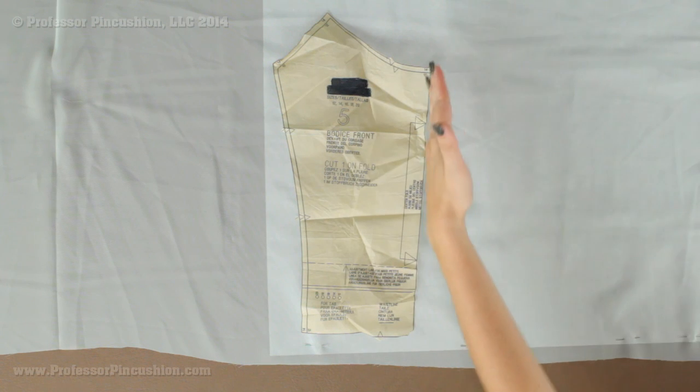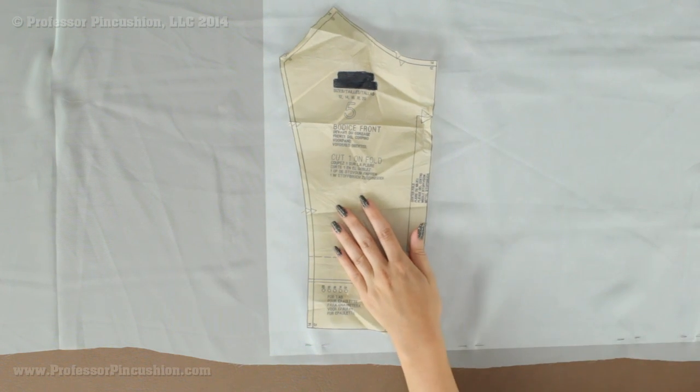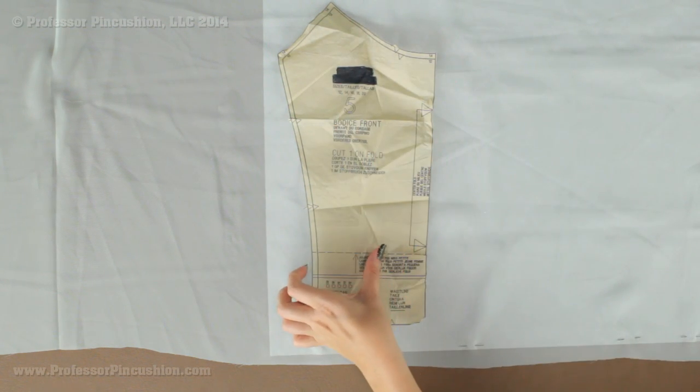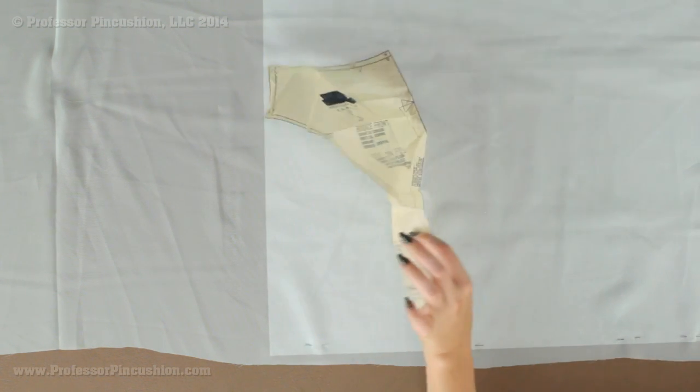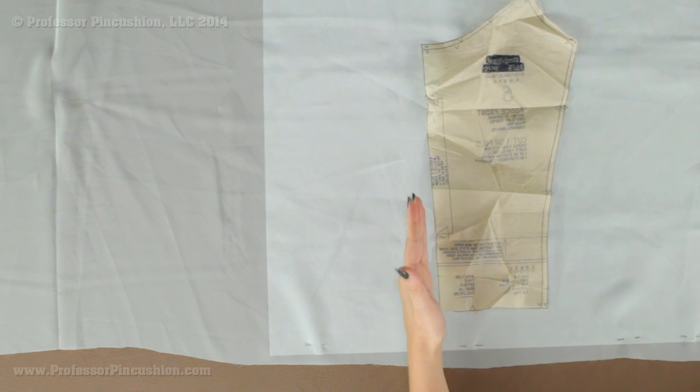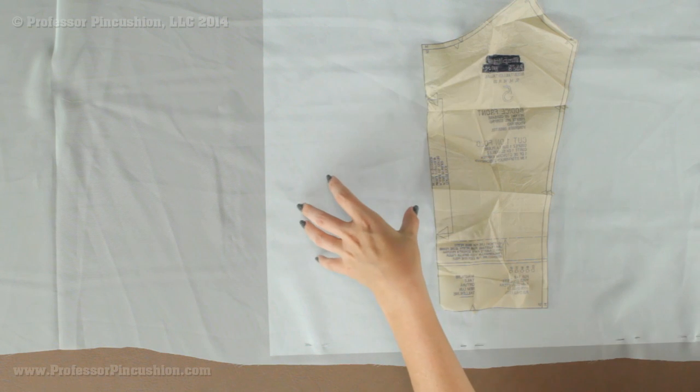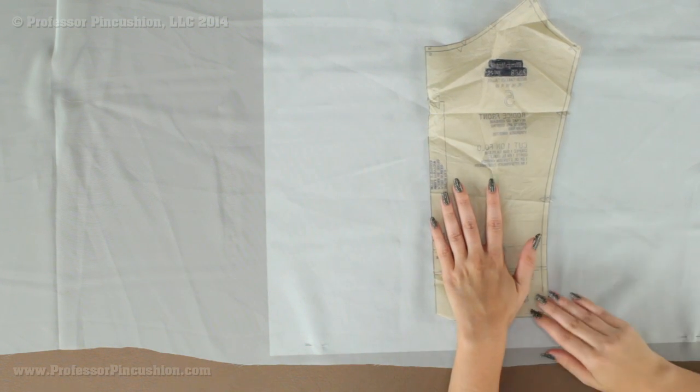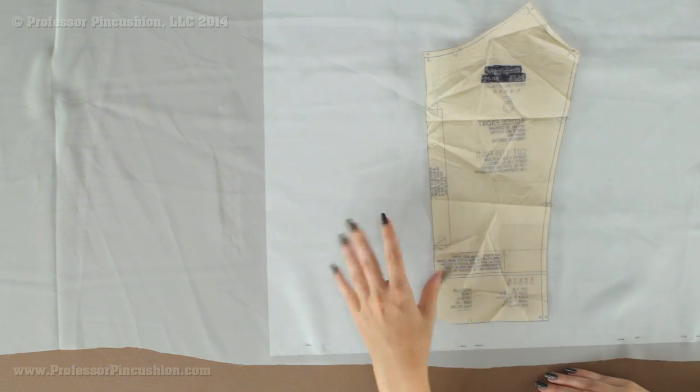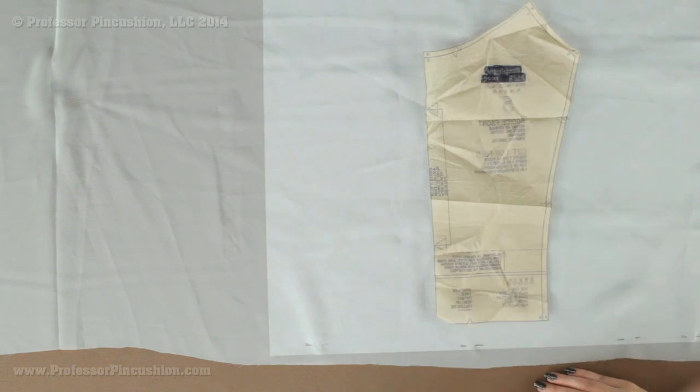If you have pattern pieces that need to be placed on the fold, what you need to do is pin it, draw an outline of it with some chalk if you can. Then you're going to unpin it, flip it, making sure the side that needs to be placed on the fold is butted up with the first pattern that you created or outline. Pin it and then you can draw an outline and then cut it out. That way you end up with a full size piece.